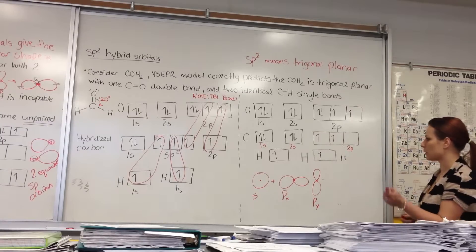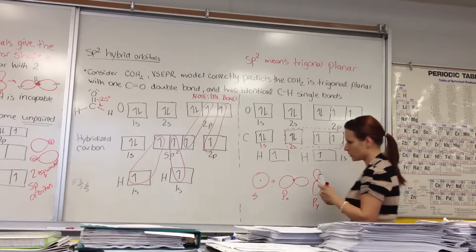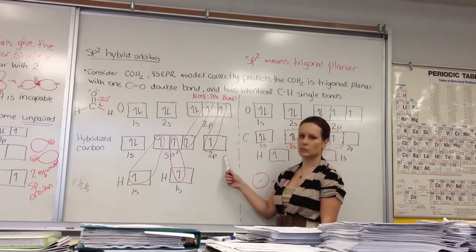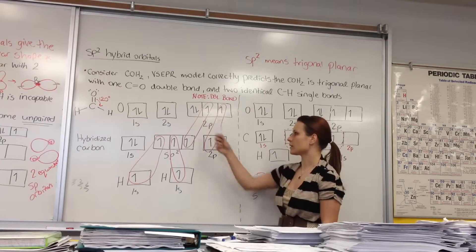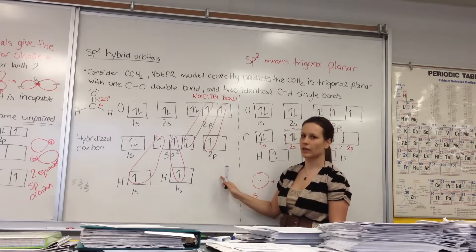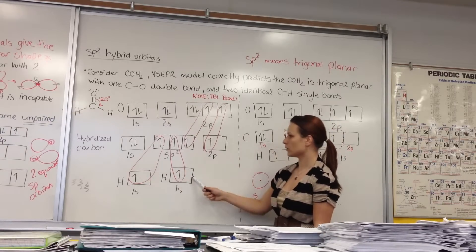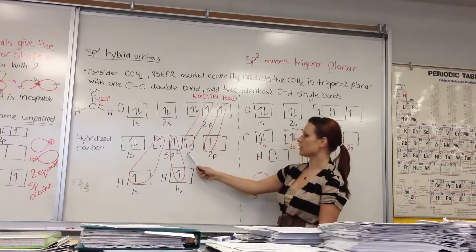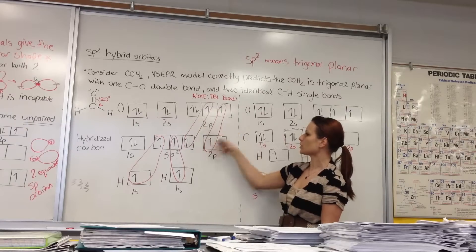The way we can do that is by hybridizing. We take the S and combine it with two P orbitals, and what we get are three equivalent SP² orbitals. We leave one of the P orbitals unhybridized with one unpaired electron — that is the nature of a double bonding situation, with a sigma bond and a pi bond. We can now achieve the two equivalent carbon-hydrogen bonds by pairing those electrons together, and one of the SP² hybrid orbitals pairs with one of the 2P orbitals from oxygen.